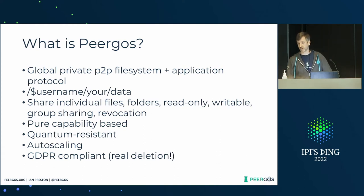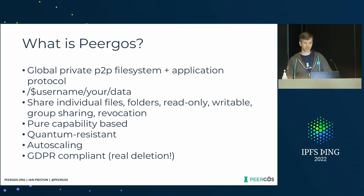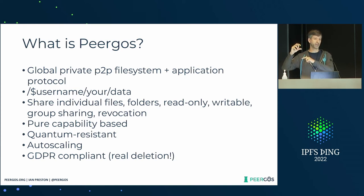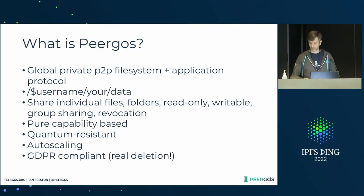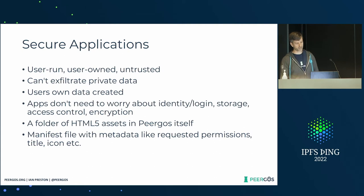We've added a new layer of access control at the block level in IPFS, so you can control who can even get the raw ciphertext blocks through IPFS. We had to extend Bitswap for that. Now, your data in Pygos — only the people who you give a capability to read that file can actually even retrieve the ciphertext. We've had read and write caps for years, but now we have a lower one called mirror caps, and that's the thing that stops the public ciphertext problem.